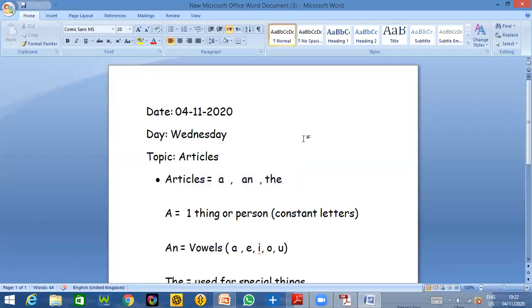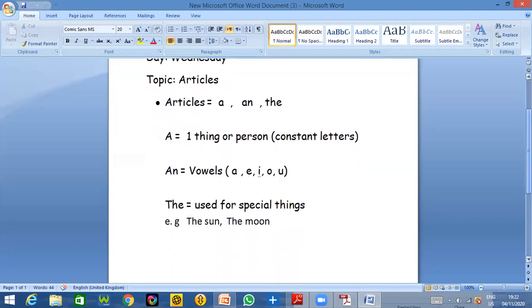Before going further, let's write the articles in the notebook. A, an, and the are our articles. A is used for one thing or a person or with constant letters. All the letters, all the alphabets in ABC,